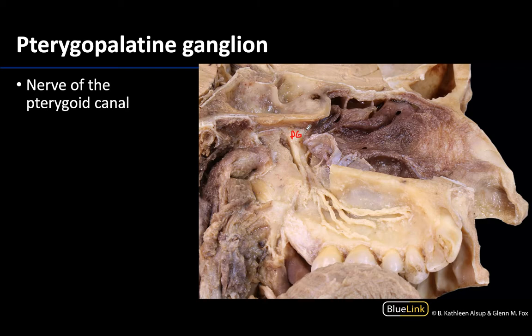Only pre-ganglionic parasympathetic fibers originating from the facial nerve through the greater petrosal nerve will synapse here. That greater petrosal nerve joins with the deep petrosal nerve, which contains post-ganglionic sympathetic fibers, to form the nerve of the pterygoid canal. The nerve of the pterygoid canal will enter the pterygopalatine ganglion posteriorly. It is here that those pre-ganglionic parasympathetic fibers will synapse — only those pre-ganglionics synapse there; many other fibers travel through this region without synapsing.